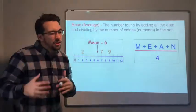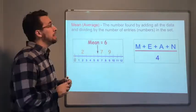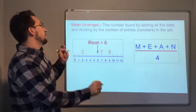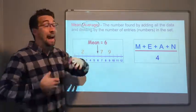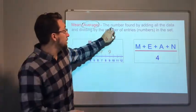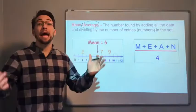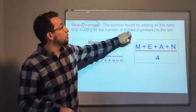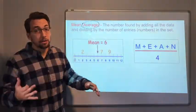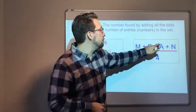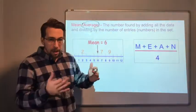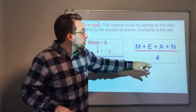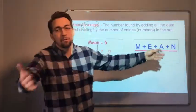So the mean, the common word for mean is average. The mean is found by adding all the data and dividing by the number of entries. Look, you add M plus E plus A plus N. That's the mean. You add them all together. How many letters are there? There's four. So you divide by four.